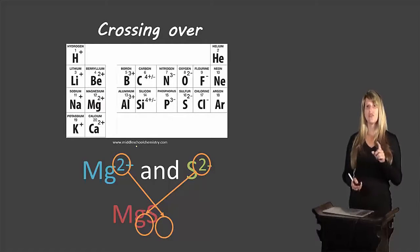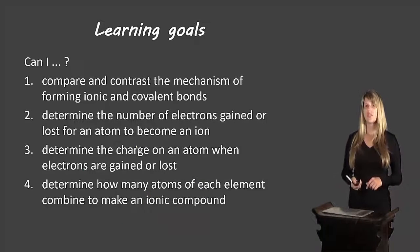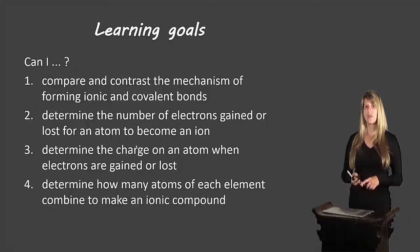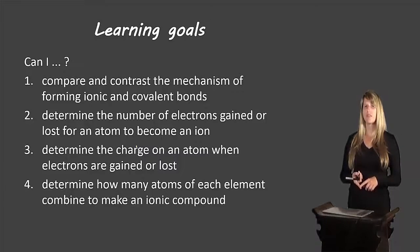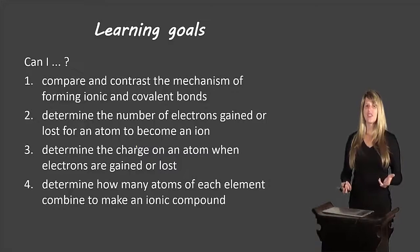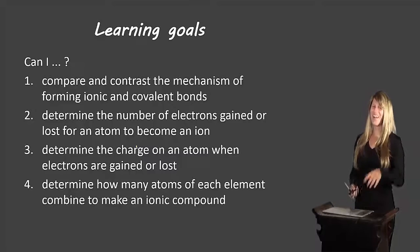Let's review all our learning goals. You should be able to compare and contrast the mechanisms for forming ionic and covalent bonds, determine the number of electrons gained or lost for an atom to become an ion, determine the charge on an atom when electrons are gained or lost, and determine how many atoms of each element combine to make an ionic compound. If you can do all these things, fantastic. If not, please re-watch the video, and if you're still having trouble, come ask me in class tomorrow. That's all for now — bye bye!